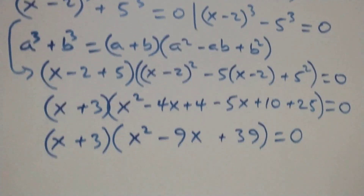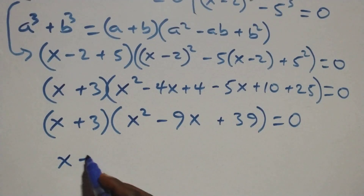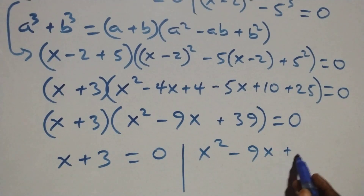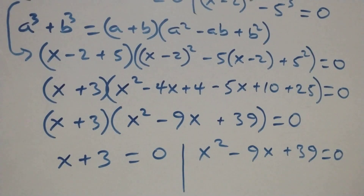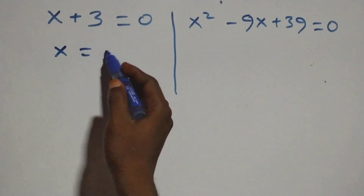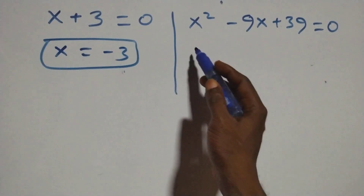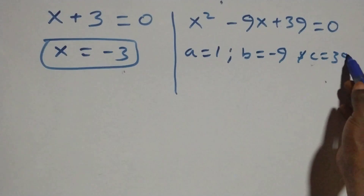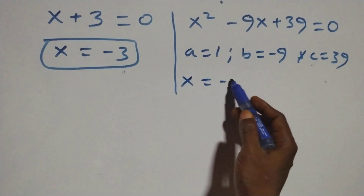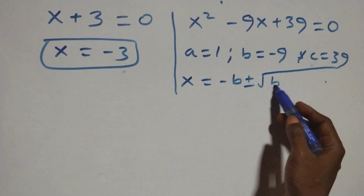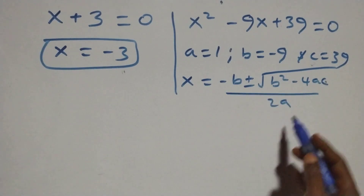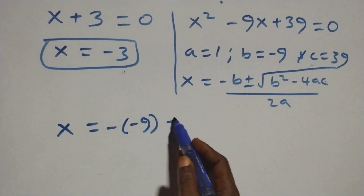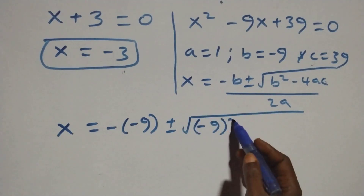Then we have two possible cases. First: x plus 3 equals 0, or x squared minus 9x plus 39 equals 0. Solving the first gives x equals negative 3, which is a real solution. For the quadratic, a equals 1, b equals negative 9, and c equals 39. We apply the quadratic formula: x equals negative b plus or minus square root of b squared minus 4ac, over 2a.